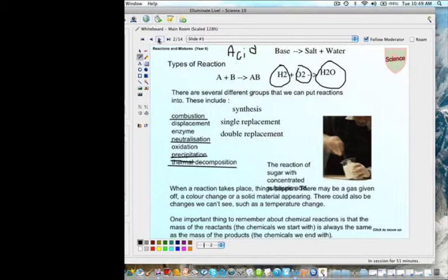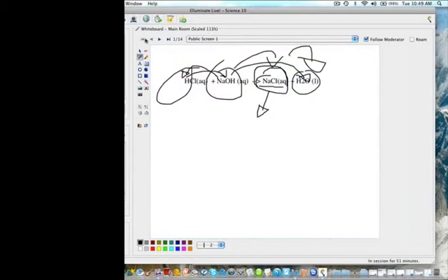So we talked about synthesis reactions. We talked about single and double replacement reactions, neutralization reactions, combustion reactions. And those are the main reaction types that you are going to need to know about. That being said, there are also two major categories of reactions that we haven't talked about. So I'm going to mention those today as well.